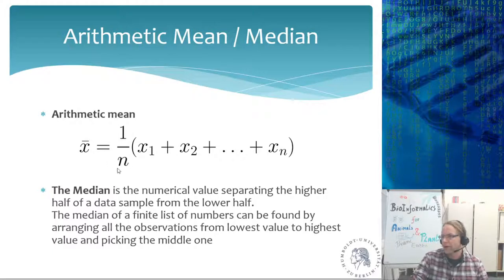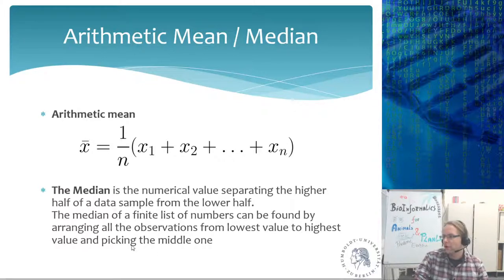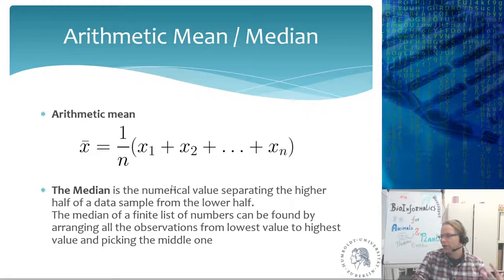The median is closely related to the mean. It is the numerical value separating the higher half of the data from the lower half. You find it by arranging all observations from lowest to highest and picking the middle one. When you have an even number of observations, take the two middle values and calculate their arithmetic mean. The mean tells you the average; the median tells you the middle of the data, and these don't have to be the same thing.